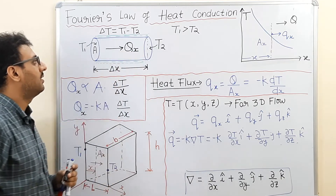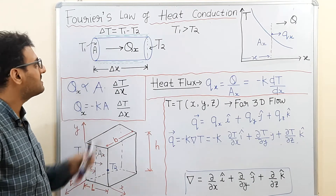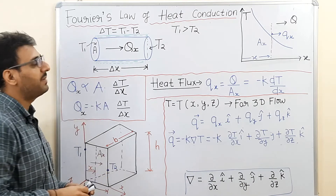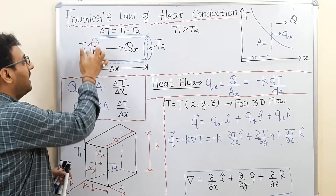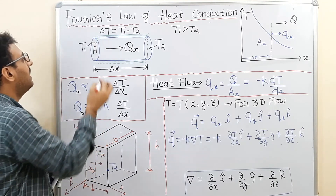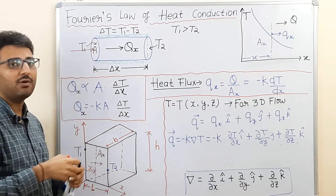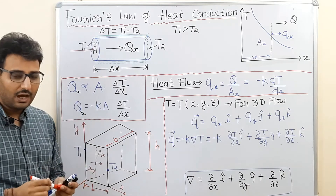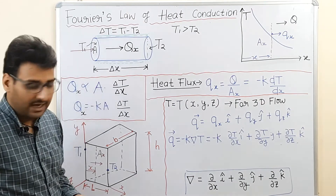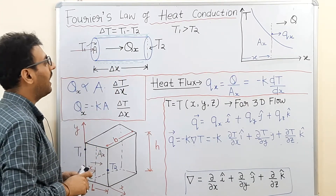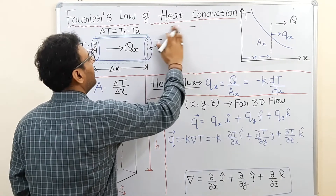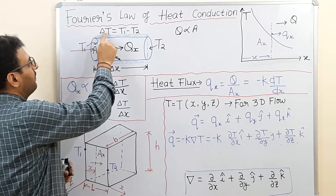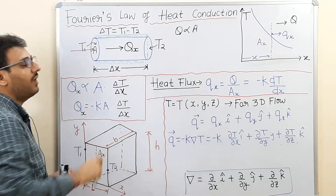Since the lateral surfaces are perfectly insulated, heat can flow in the axial direction only, which is the x direction. We can measure the heat flow rate through this cylindrical rod. After observing its behavior, the heat flow rate depends on three variables: the cross-sectional area perpendicular to heat flow, the temperature difference, and the length of the rod. When temperature difference and length are constant, heat flow rate is directly proportional to the cross-sectional area.